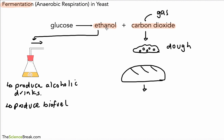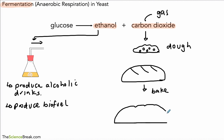Remember ethanol is produced in this process as well. This is alcohol, so we don't want alcohol in our bread, but luckily when we bake this in the oven all the ethanol evaporates away and is gone. So we end up with a nice loaf of bread — this is bread that's been baked from dough that has yeast in it.